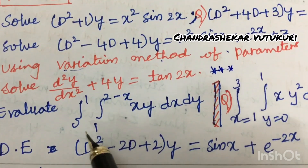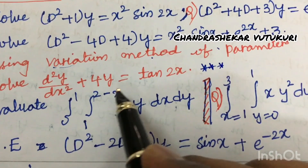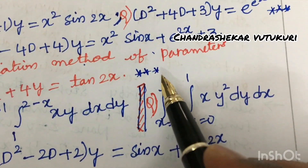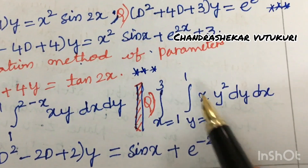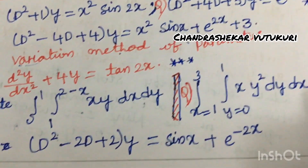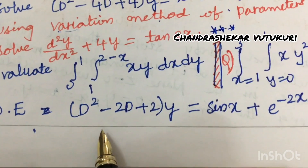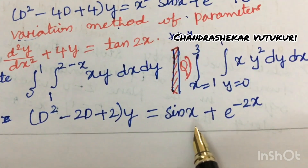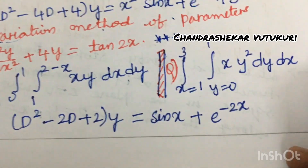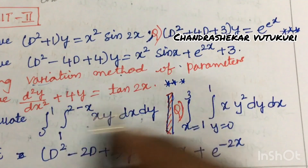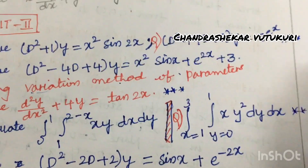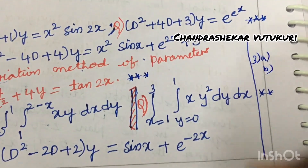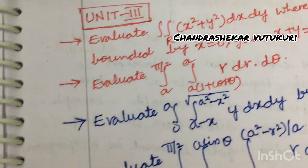Evaluate the double integral ∫₀¹ ∫₁^(2-x) xy dx dy, or the double integral where x goes from 1 to 3 and y from 0 to 1 of xy² dx. Also solve (D² + 2D + 2)y = sin x + e^(-2x). From this part you are going to get one double integration question for sure — expected as question 3a or 3b.